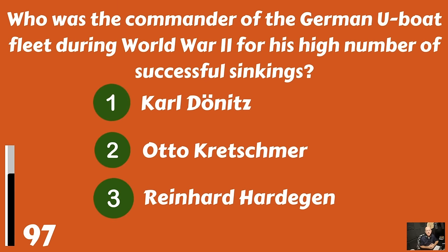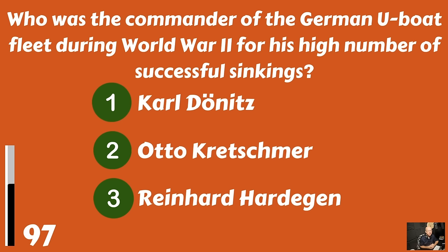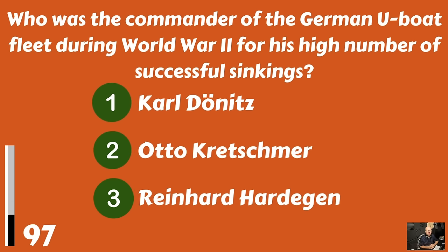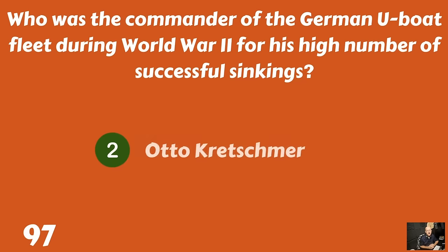Who was the commander of the German U-boat fleet during World War II, known for his high number of successful sinkings? Karl Dönitz, Otto Kretschmer, or Reinhard Hardegen? Otto Kretschmer.